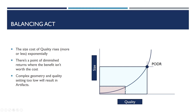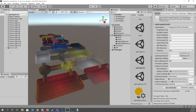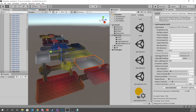Lightmap artifacts are a common problem when baking lightmaps. Bright spots or shadows appear where they shouldn't because lightmap data from one region bleeds into an adjacent chart. This can happen when the padding setting is too low or the lightmap scale is too low. I can consistently recreate this problem. Looking at the multi-object scene, I can examine the model file in the inspector and go to the lightmap UV settings to control the minimum lightmap resolution per object.